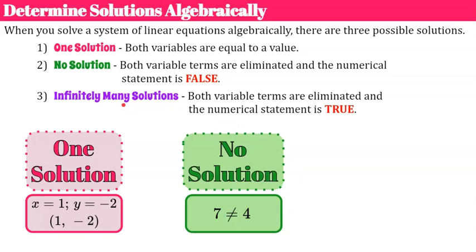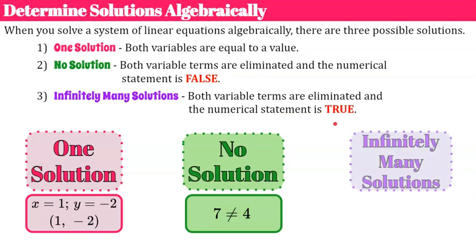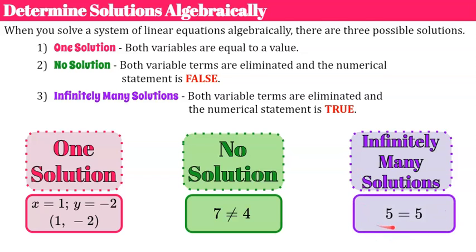The third kind is infinitely many solutions. When solving algebraically, both variable terms are eliminated, but now the numerical statement is true — a number equals that same number. This means any ordered pair you plug in will be true for both equations.